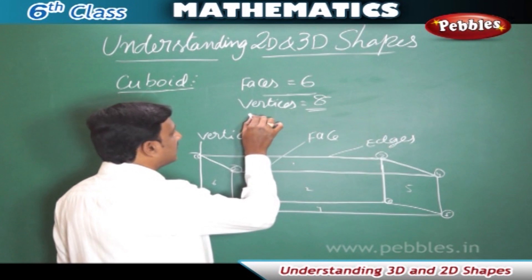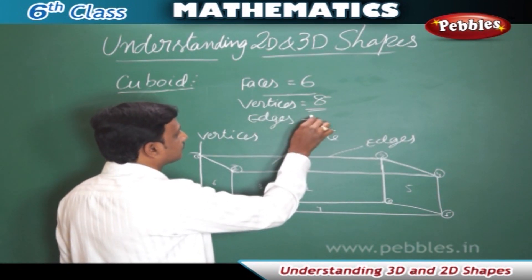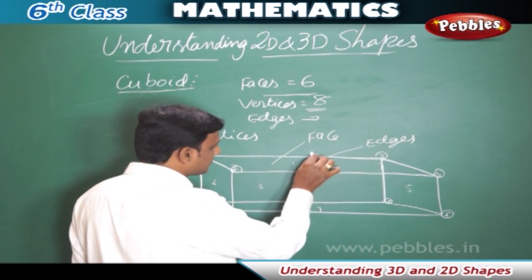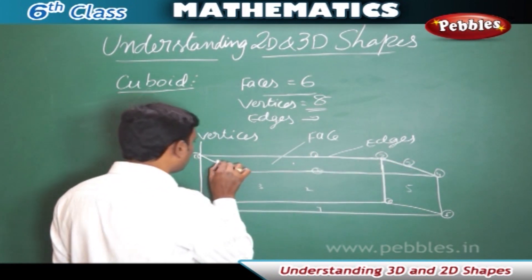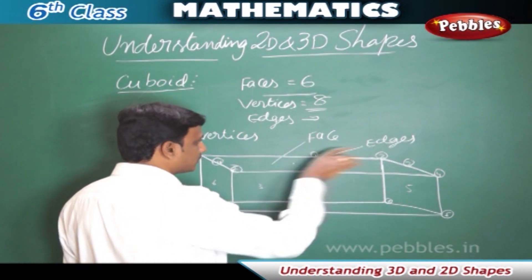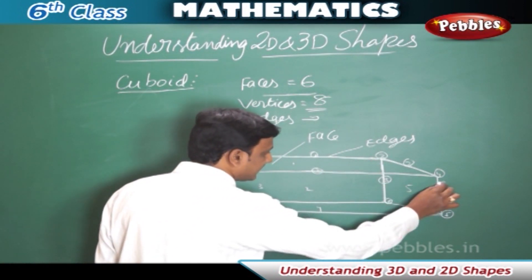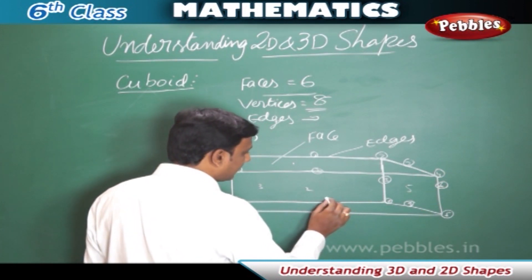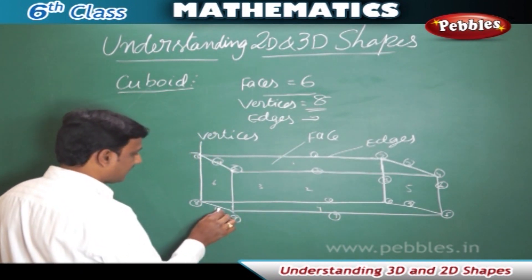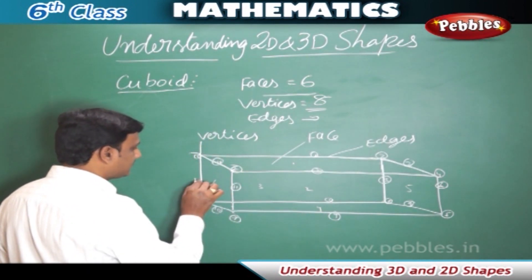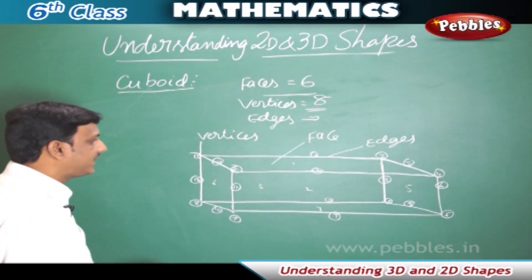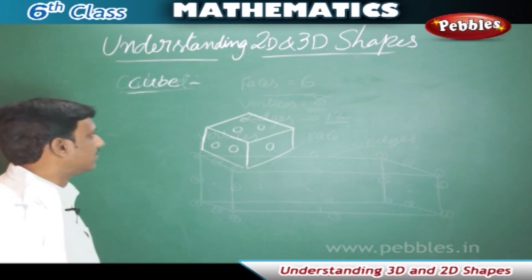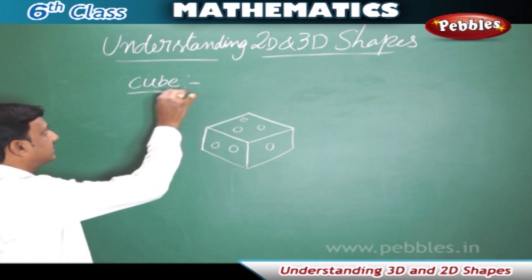Now let us look at the edges of a cuboid and count them: 1, 2, 3, 4 on the top; then 5, 6, 7, 8; and 9, 10, 11, 12. So a cuboid has 12 edges.